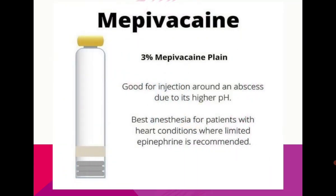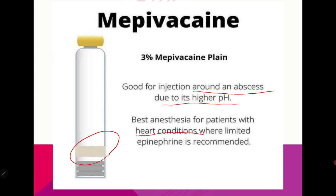The fourth solution is mepivacaine — 3% mepivacaine plain, marked with a tan color. This is a good choice for injection around an abscess due to its higher pH, making it the best option in cases of abscess drainage. It is also the best anesthesia for patients with heart conditions where epinephrine is limited or contraindicated.